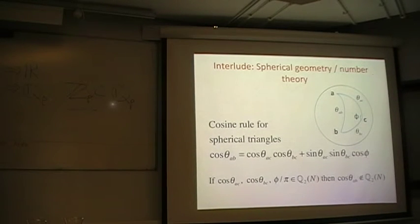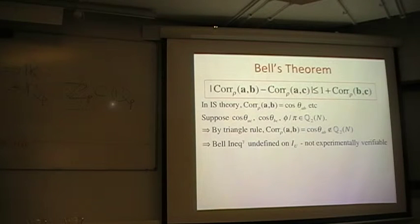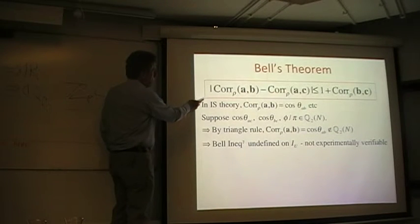n is related to the p of the p-adics by this formula here. So p is like a Fermat prime, where n is a large Fermat prime. Now I just need to do a quick interlude, which says, which is kind of the heart of this.